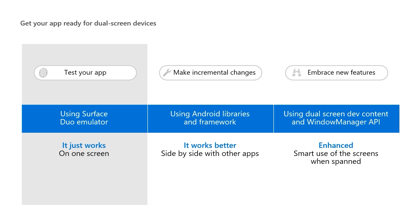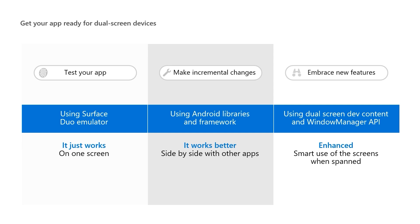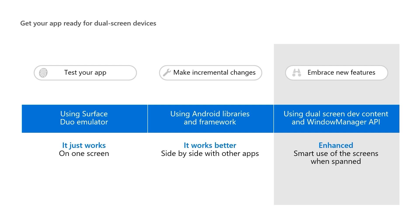There are many ways to explore the value of foldables for your app. Here's one way to think about the approach: a three-step process to adapt your application for foldables like the dual-screen devices. Start by testing your application on dual-screens — you can use the emulator for that. Second, you can make small incremental changes so your app will work better when running side-by-side with another application. Then, and this is where the magic happens, think about what you can do in your app with two screens to present your content. Let's dig a little deeper into these three steps.